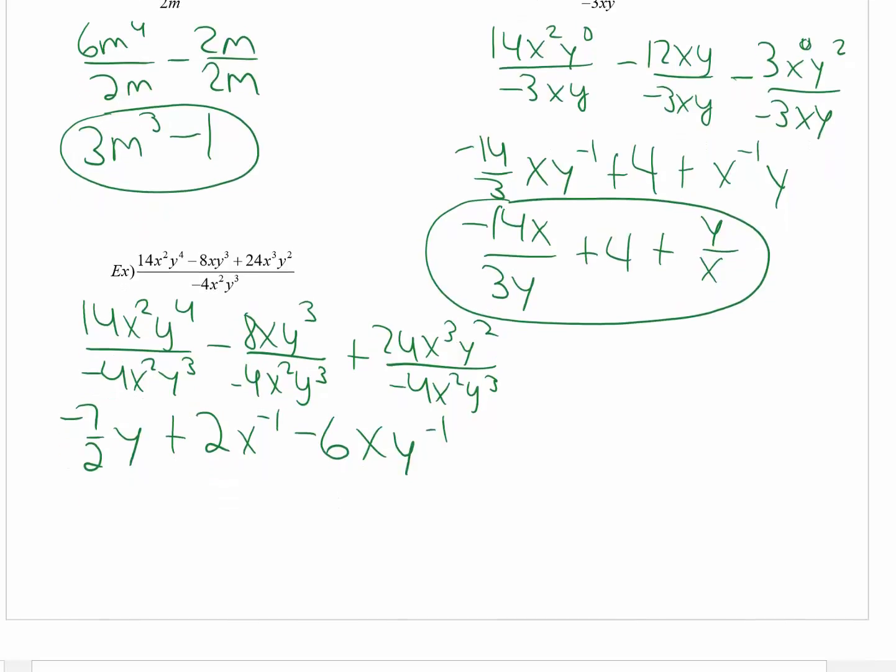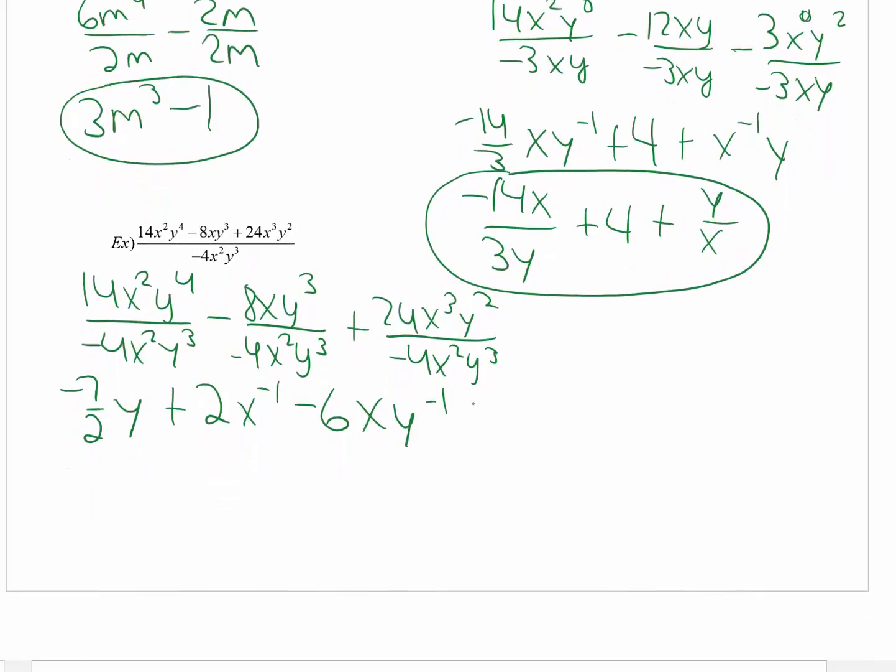So then from here, the last step is to simplify the negative exponents. So negative 7 halves y stays the same. 2 stays in the numerator because it has a positive exponent power of 1. The x moves to the bottom. The 6 and the x remain in the numerator. And the y is in the denominator here.